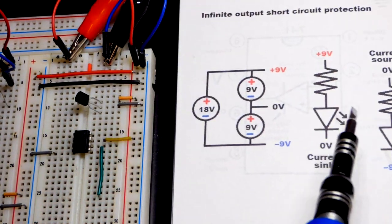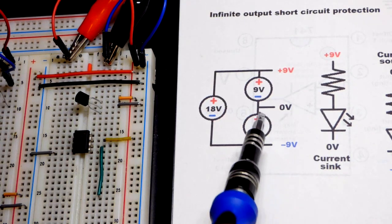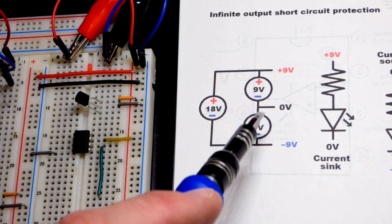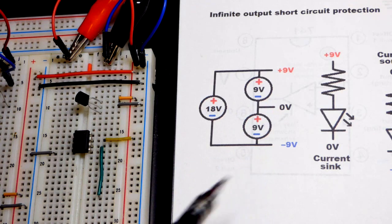Now a lot of circuits want a split power supply. So the zero volts is not the most negative part of the circuit. You can go more negative or more positive and the zero volt reference point is usually halfway in between there.